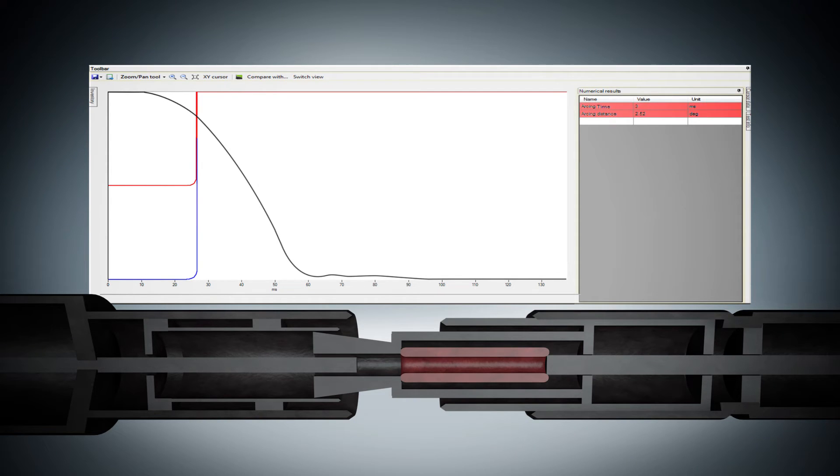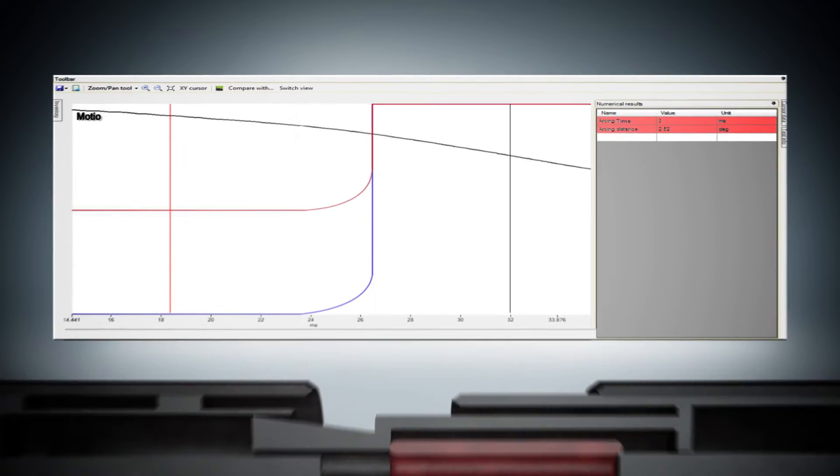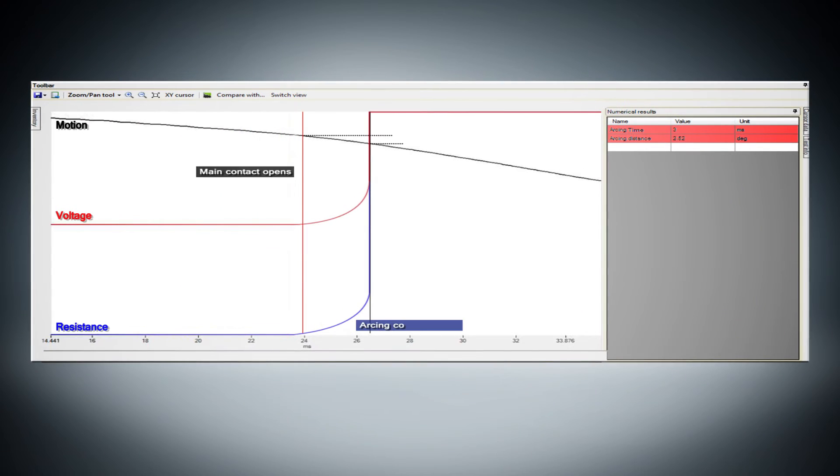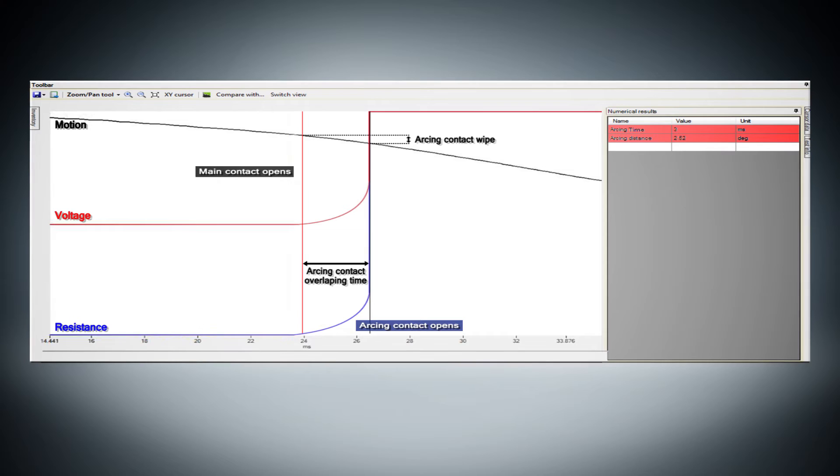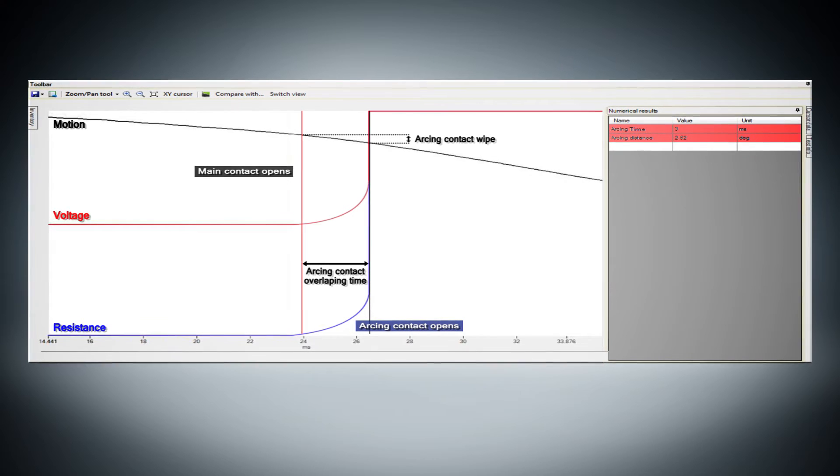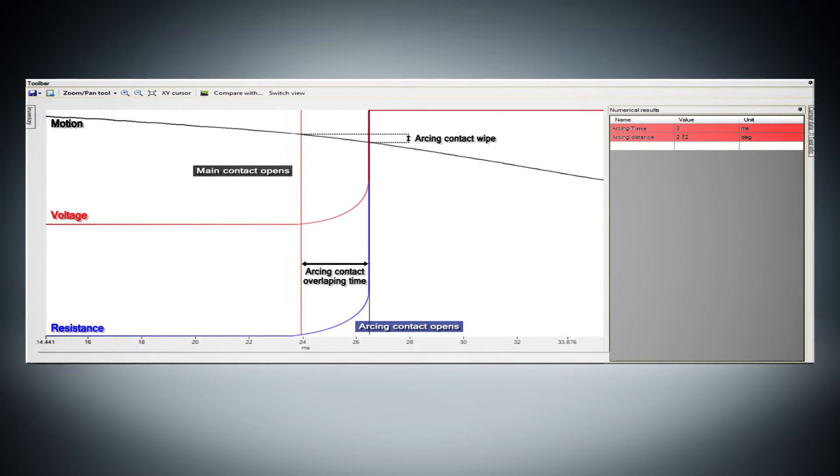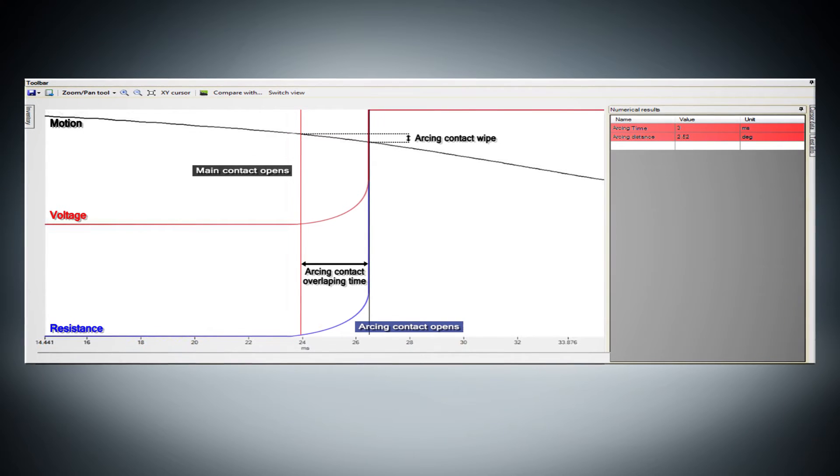The dynamic resistance measurement method measures variations in the contact resistance during the breaker operation. When the breaker contact motion is measured simultaneously with resistance, the results can be used to assess the wear or reduced length of the arcing contact.